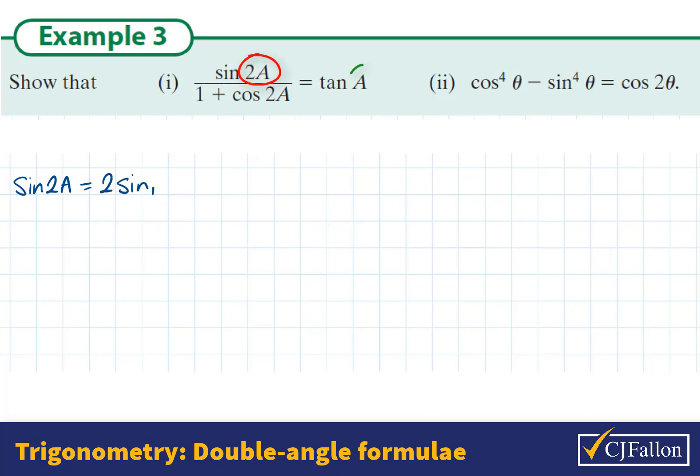So we want to show that the left hand side equals the right hand side of the equation. We notice first that there are some double angles on the left hand side like sine 2A, but the answer is just a single angle. So I'm going to pick a formula that converts sine 2A into a single angle and I need a formula that converts cos 2A into a single angle as well.